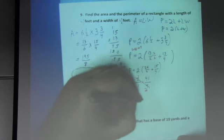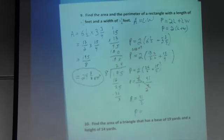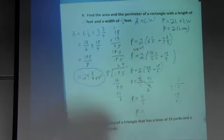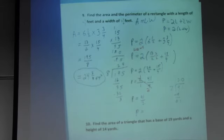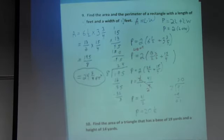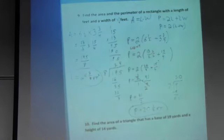41/2 is improper, so divide: 2 goes into 41 — 2 goes into 4 twice, remainder 0; bring down 1, 2 does not go into 1, so place 0 and remainder 1. The answer is 20 and 1/2. Don't forget the units — perimeter is in regular units, so 20½ feet.